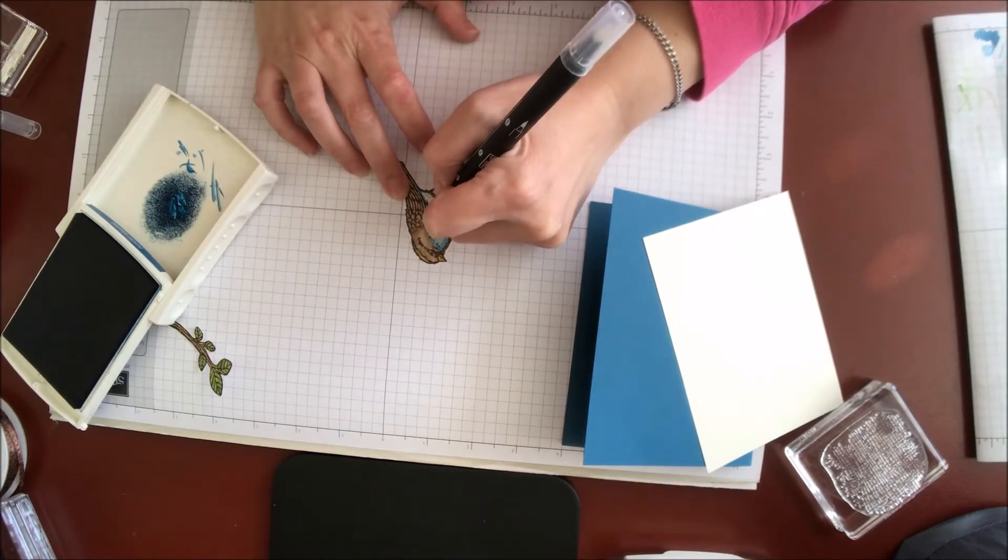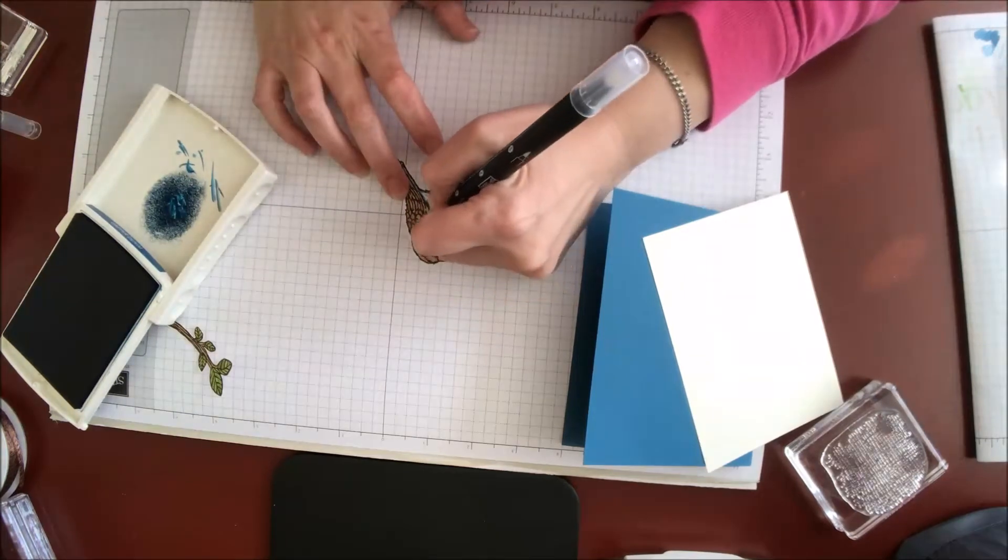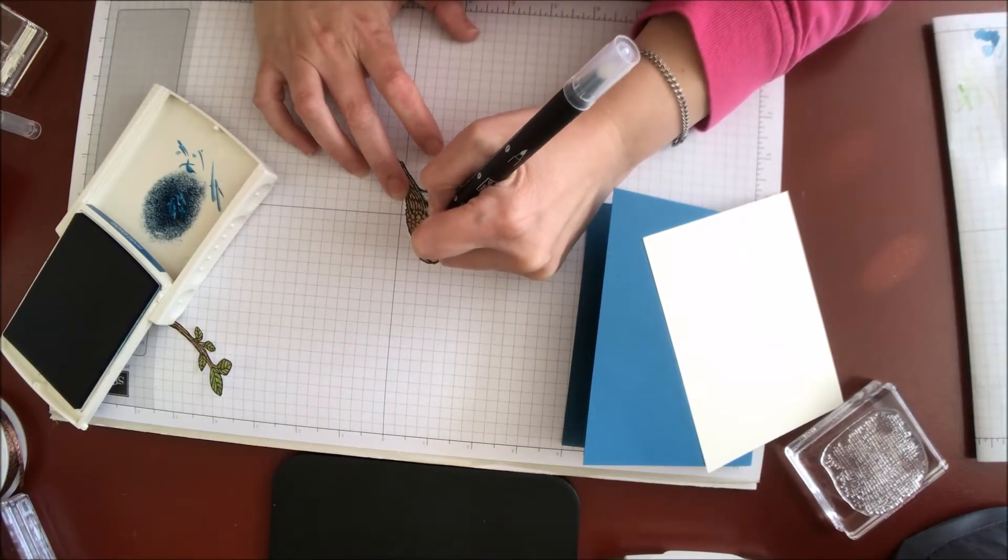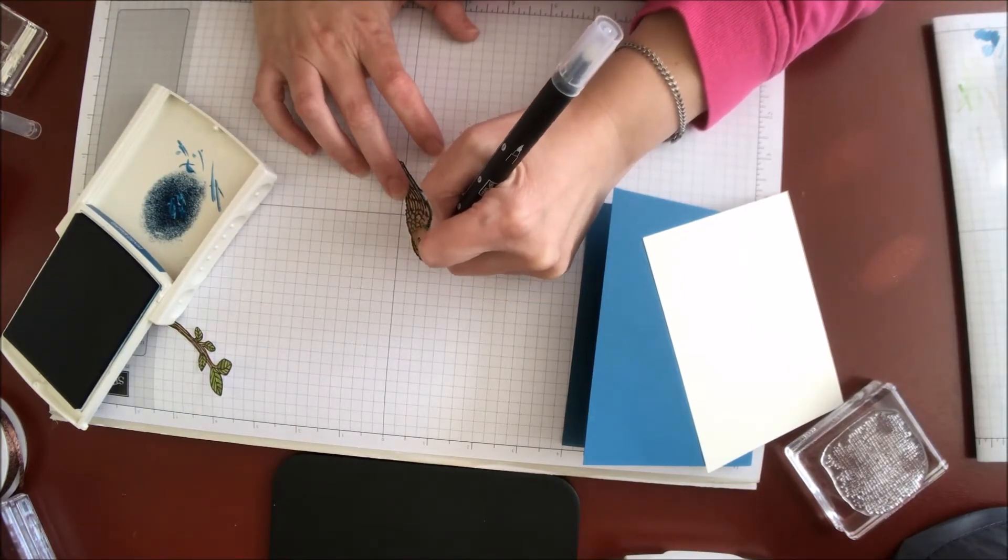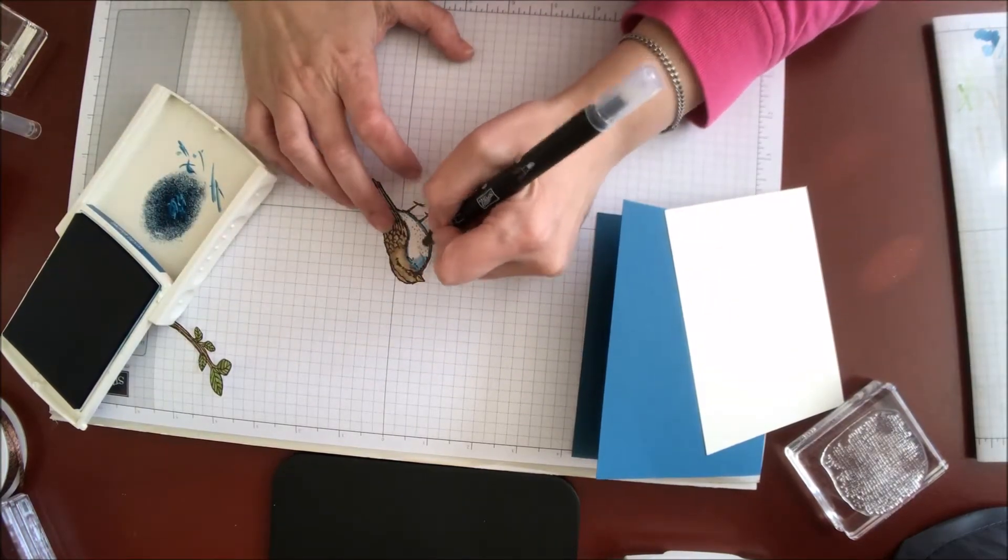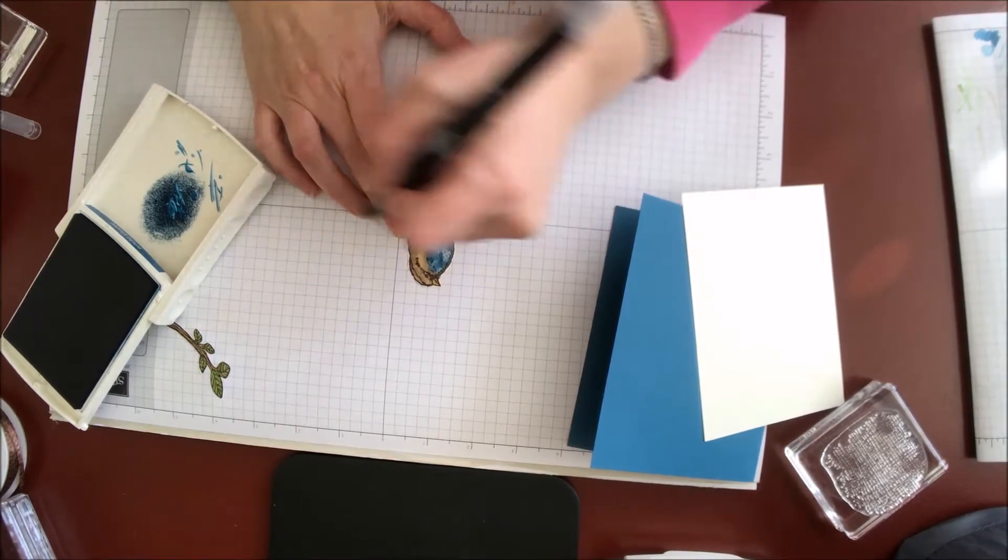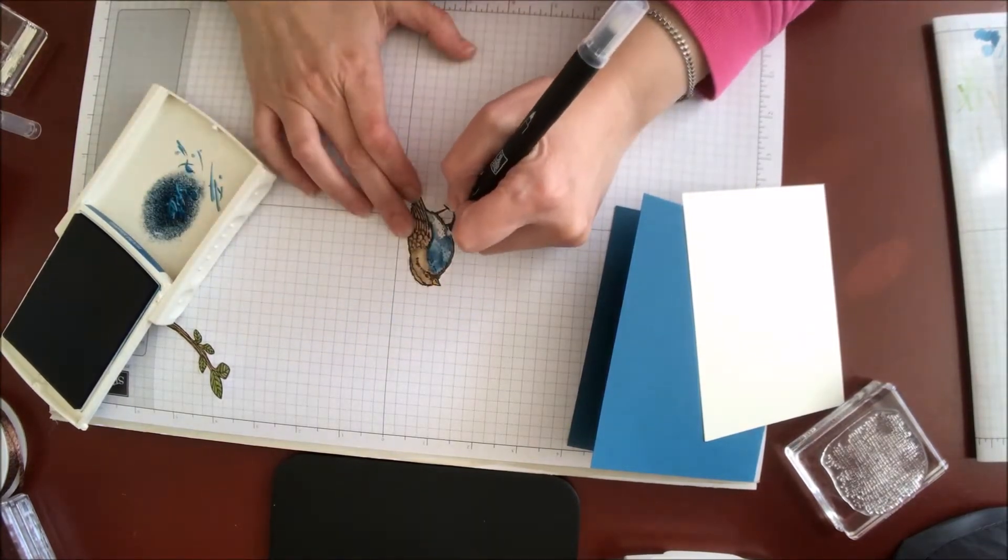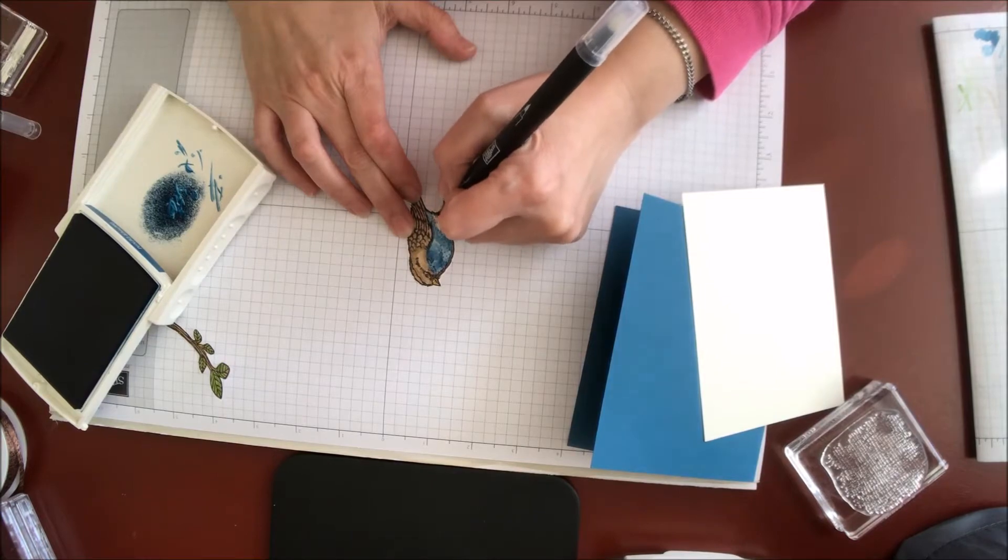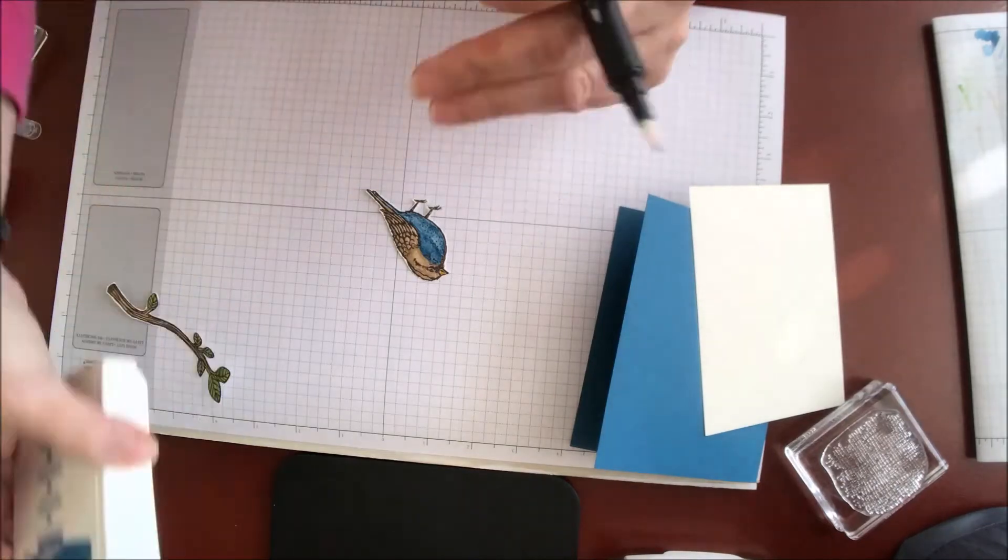If you don't have a blender pen, you could certainly do this on watercolor paper and use your aqua painter. Or you could use colored pencils or the Stampin' Blends if you have those. I don't want to spend too much time on the coloring part because I don't want you guys to get too bored watching me color. And I'm happy with that. So I'm going to close him up and I'm done with my bird.